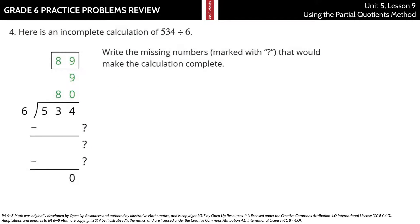Here's an incomplete calculation of 534 divided by 6. Write the missing numbers marked with question marks that would make the calculation complete. Well, here we have 80 groups of 6, which is 480 being subtracted away, which leaves us with 54. Then we had 9 groups of 6, which is 54, and we ended up with 0.